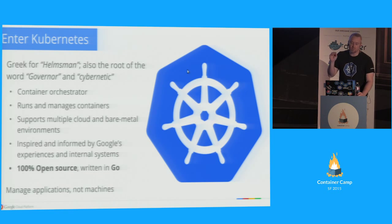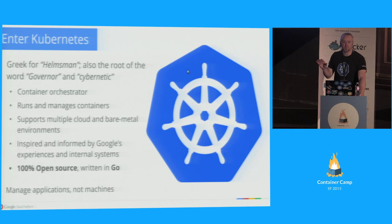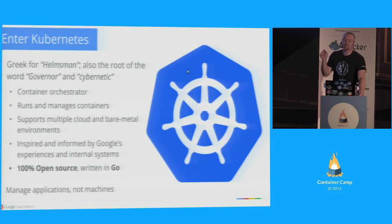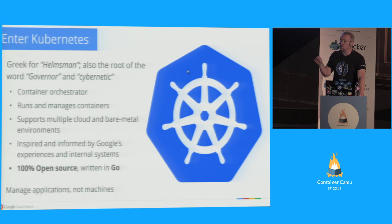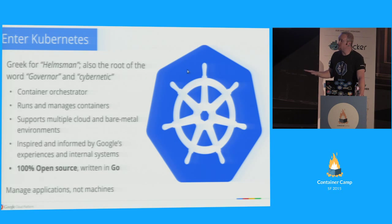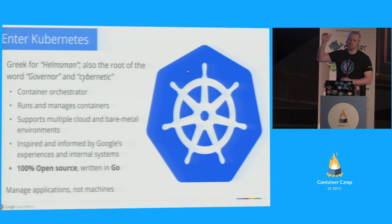Kubernetes as a system is inspired by and informed by Google's experience building these systems. We published a paper called Omega, and as of this week we published a paper on our Borg system with lots of gory details. Kubernetes is inspired by those systems, but it is not an open-sourced version of them — we've made very different design decisions. Things that made sense in Borg ten years ago were correct then but are wrong now. Kubernetes is 100% open source, we work in the open, and it's written in Go — a great language that fits between C++ and Java.